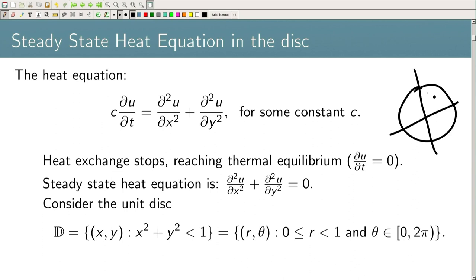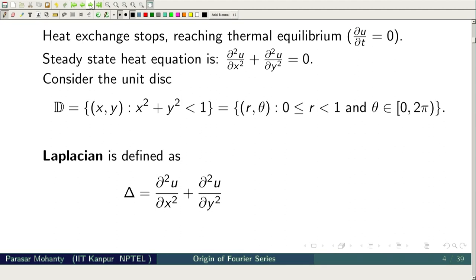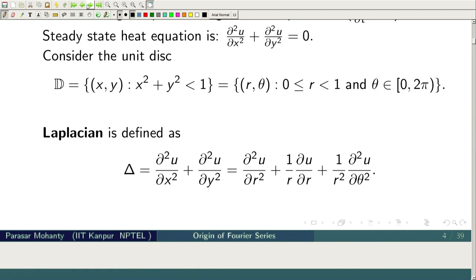The radius r varies from 0 to 1 for the open unit disk, meaning the boundary is not included. The Laplacian Δ = ∂²u/∂x² + ∂²u/∂y² in polar coordinates becomes ∂²u/∂r² + (1/r)∂u/∂r + (1/r²)∂²u/∂θ². This can be derived by substituting x = r cos θ and y = r sin θ and applying the chain rule.